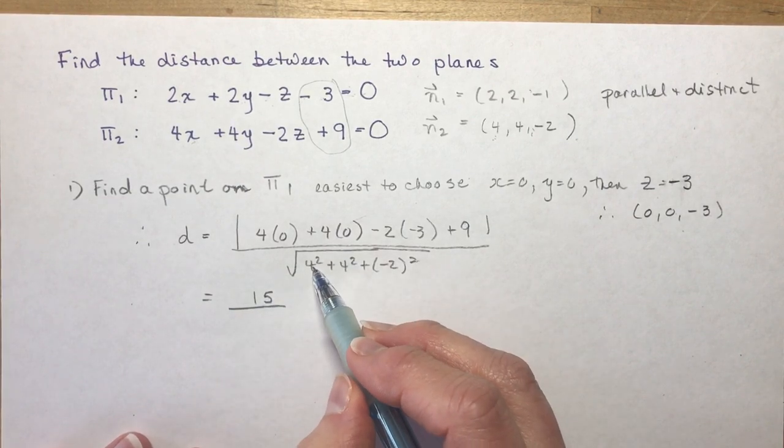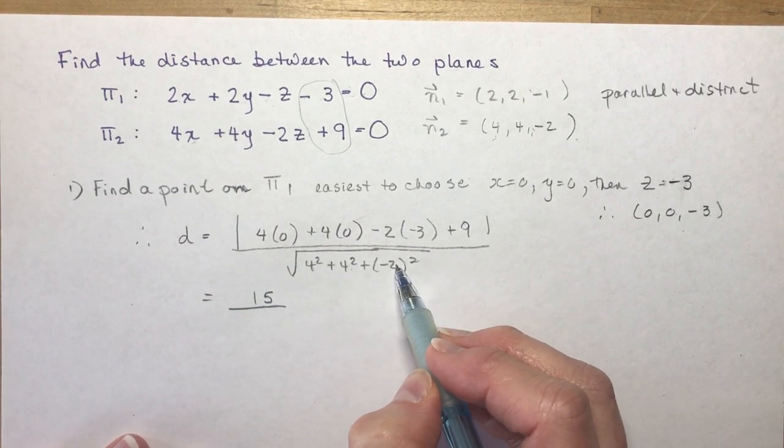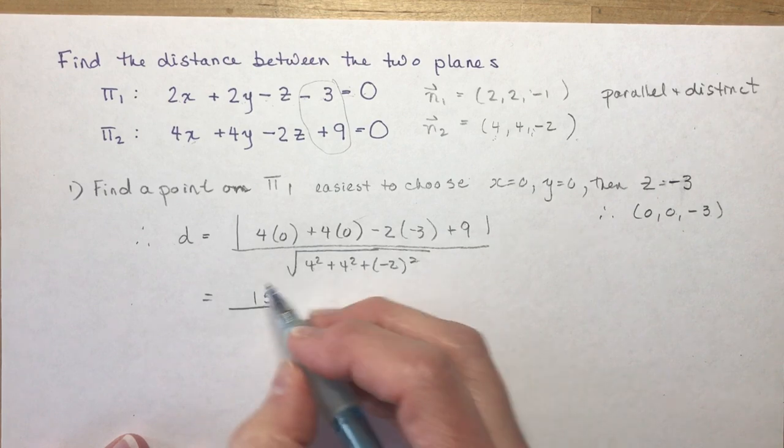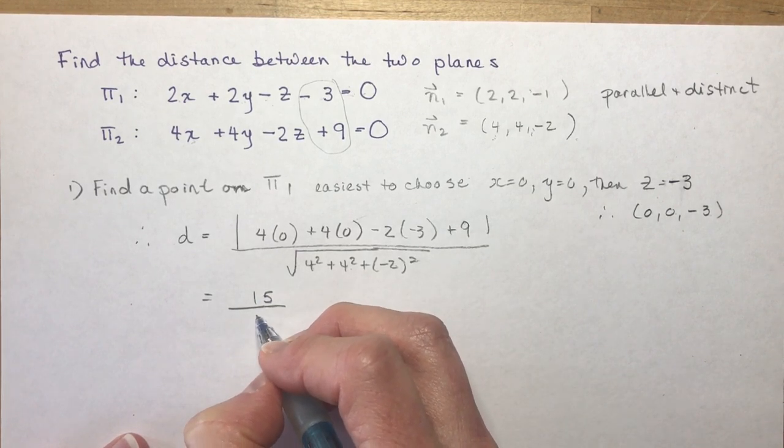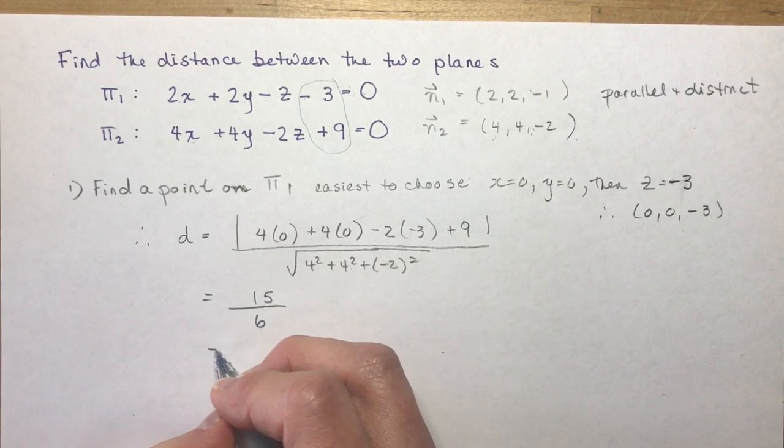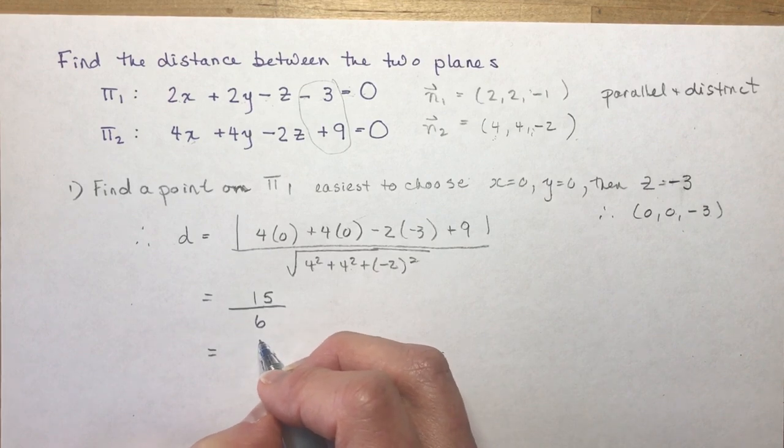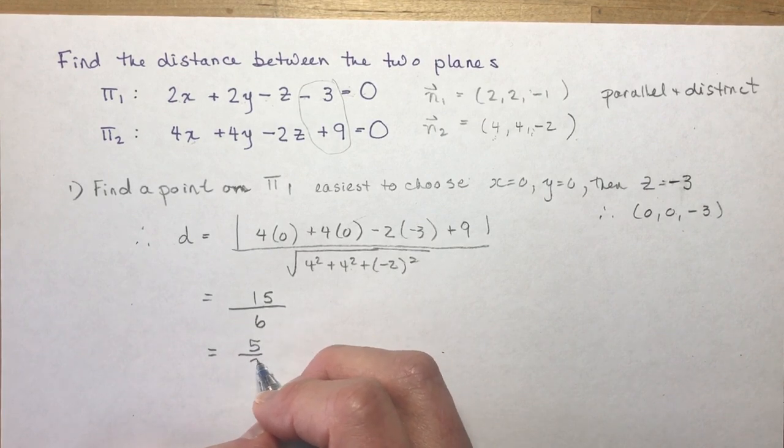And in the denominator, we have 16 and 16 is 32, plus 4 is 36, square root of 36 is 6, and 15 over 6 of course would reduce to 5 over 2.